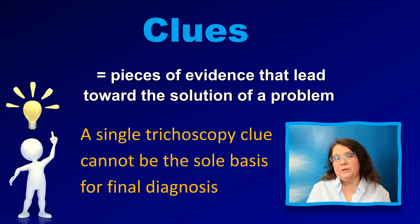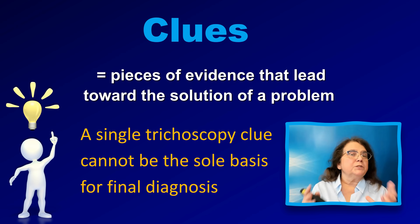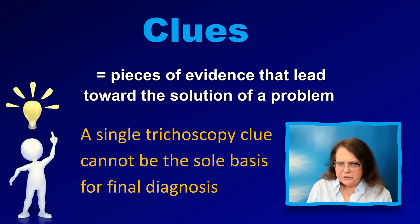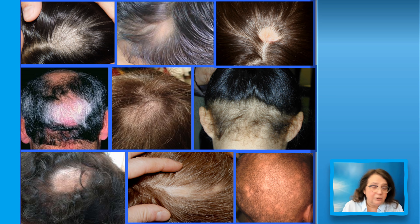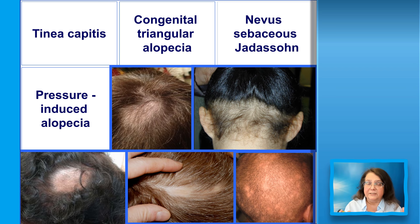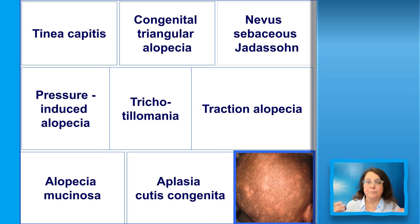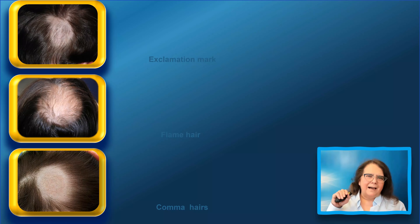What I have been showing are clues — pieces of evidence which may lead toward a solution of a problem. If we see these features in trichoscopy, they may lead us toward the diagnosis, but they are not the diagnosis by themselves. When you take a look at these patients, you may have the impression they have a similar type of disease, but in fact in every patient the trichoscopy image will be different. These are patients with nine different causes of hair loss requiring nine different approaches to therapy.